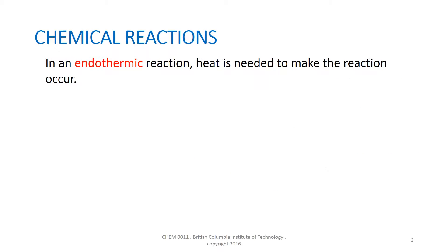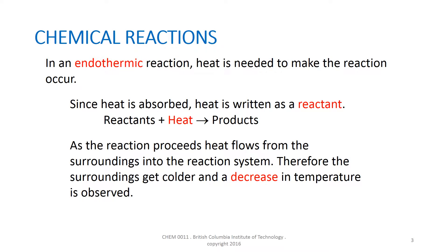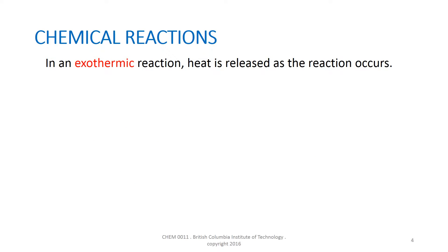In an endothermic reaction, the products have higher energy than the reactants. Therefore, energy, usually in the form of heat, flows into the reacting system. Since energy is needed to make the reaction proceed, heat can be written as a reactant in the chemical reaction. Since energy is flowing from the surroundings into the reaction system, the surroundings are losing energy. Therefore, the surroundings will get colder and a decrease in temperature will be observed.